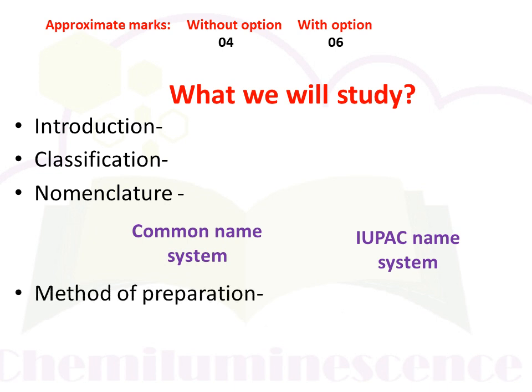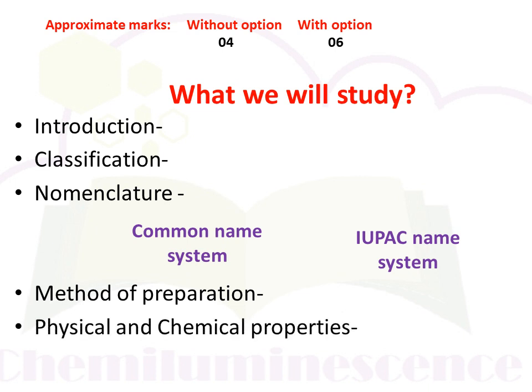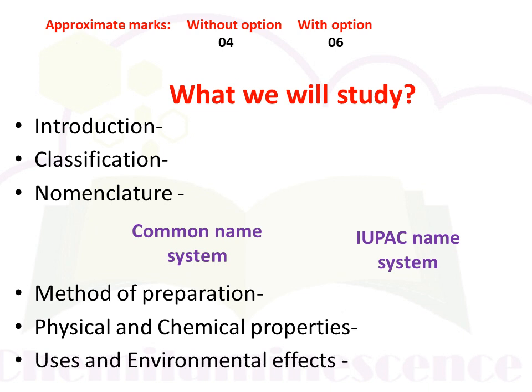After that, we will see the method of preparation — the different methods by which halogen derivatives are synthesized. Then we will study the physical and chemical properties of halogen derivatives, that is, how physically and chemically halogen derivatives behave. And lastly, we will see the usage and environmental effects of halogen derivatives.